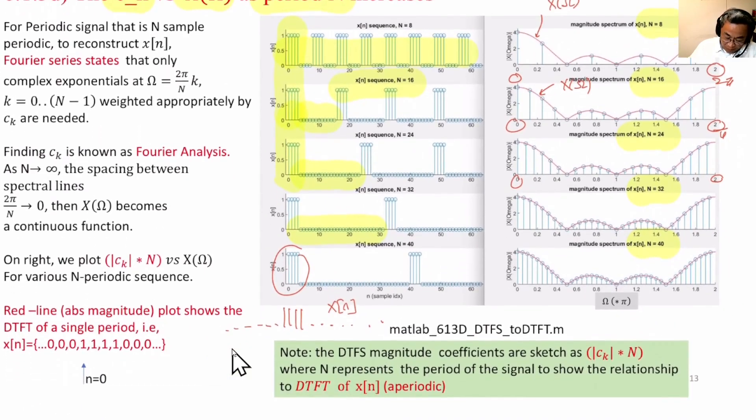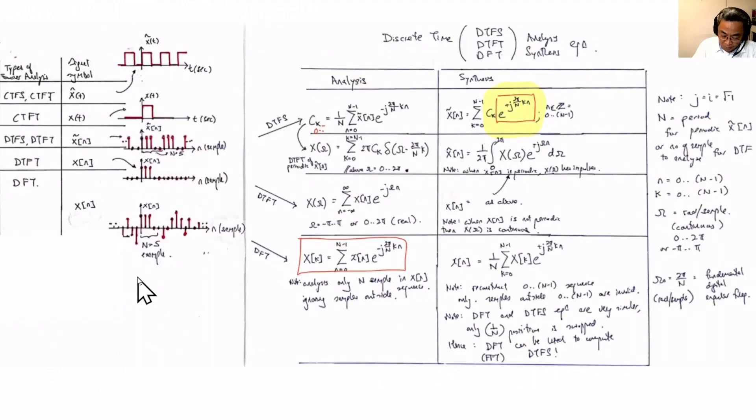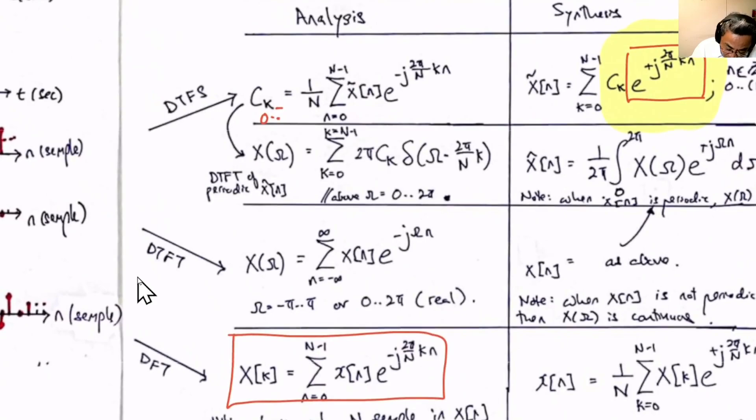So this is the big figure. On the right, we are plotting X of omega. But we are plotting not only absolute of Ck, but we are plotting absolute of Ck multiplied by N. Why is this so? Let's see the equation. Let's see the analysis equation.